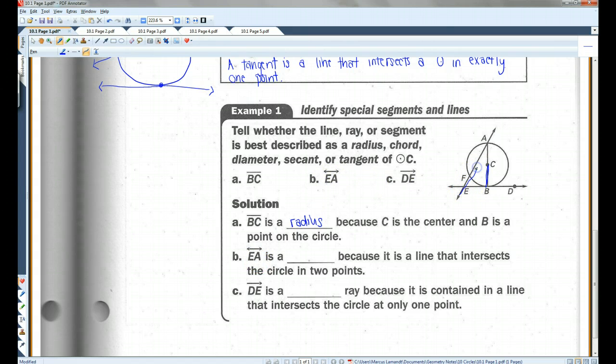Line EA, that's this line here. Line EA is a secant because it is a line that intersects the circle in two points. Now, if they had been asking for segment EA, notice how there are no arrows, you would say that this is a chord because a chord is a segment. A secant is a line. So because we're looking at the line, it's going to be a secant.